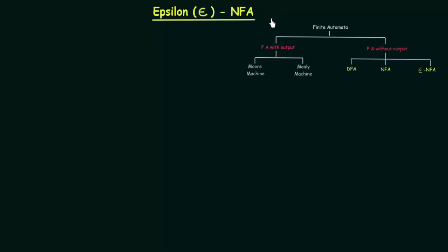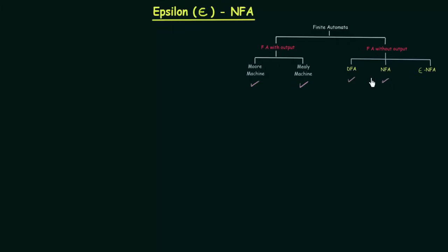Till now, in this lecture series we have been studying about finite automata. Under finite automata we have seen finite automata with output and finite automata without output. In finite automata with output we studied Moore machine and Mealy machine and how to convert one to the other. Under finite automata without output we studied DFA and NFA and how to convert one to the other.